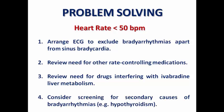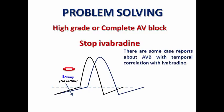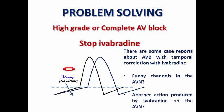Consider screening for secondary causes of bradycardia like hypothyroidism or hyperkalemia. If the patient develops high-grade or even complete AV block after taking ivabradine, stop ivabradine immediately. Although ivabradine acts on the SA node, there are case reports of AV block temporally correlated with ivabradine intake, possibly explained by the presence of funny channels in the AV node or another action we don't fully understand. So in this case, stop ivabradine as it is likely the offending medication.